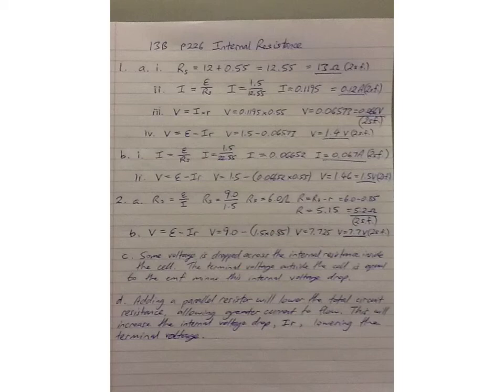And Part D, another resistor is connected parallel to R. Explain how this will affect the terminal voltage. The answer, adding a parallel resistor will lower the total circuit resistance, allowing greater current to flow. This will increase the internal voltage drop, I times R, lowering the terminal voltage.